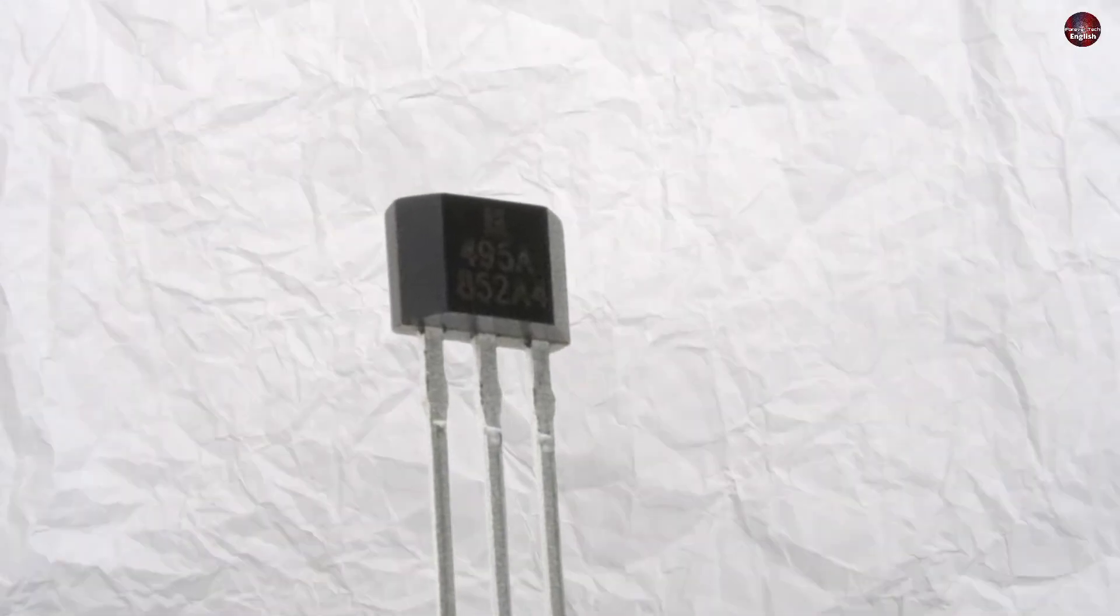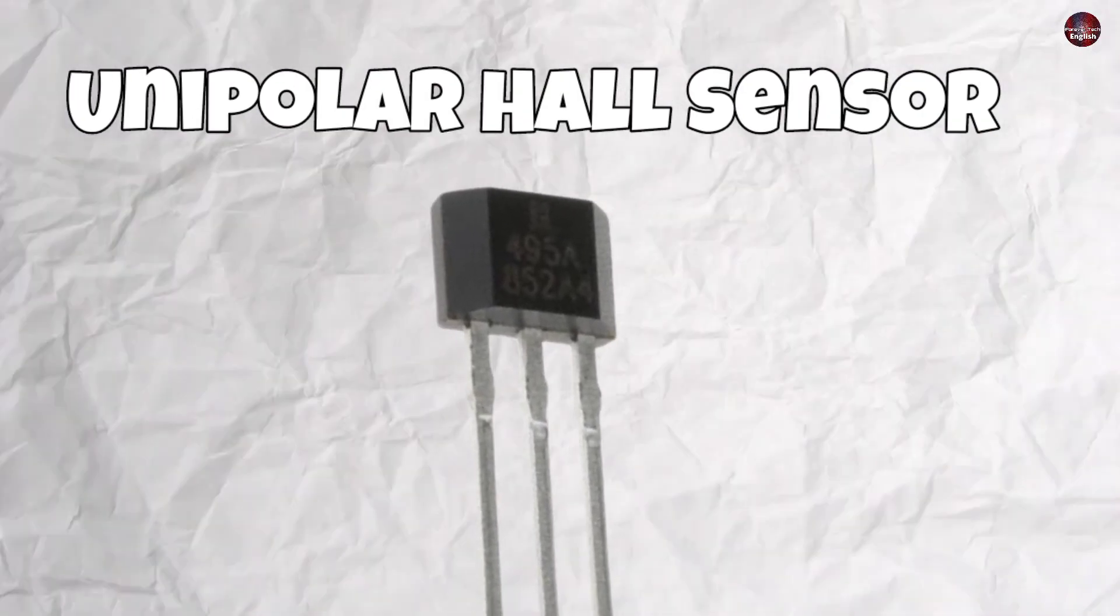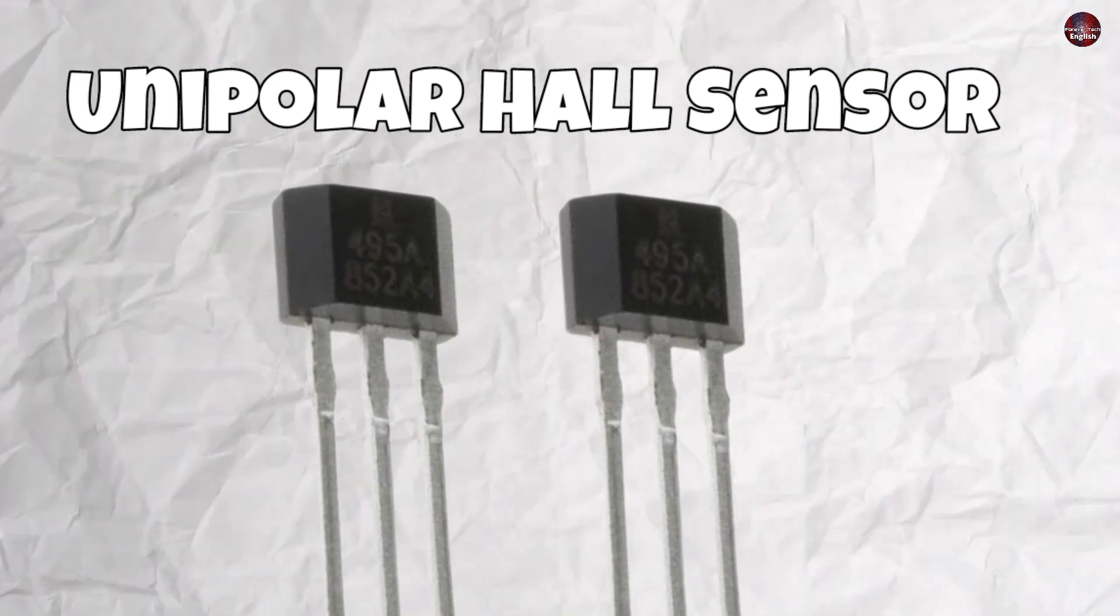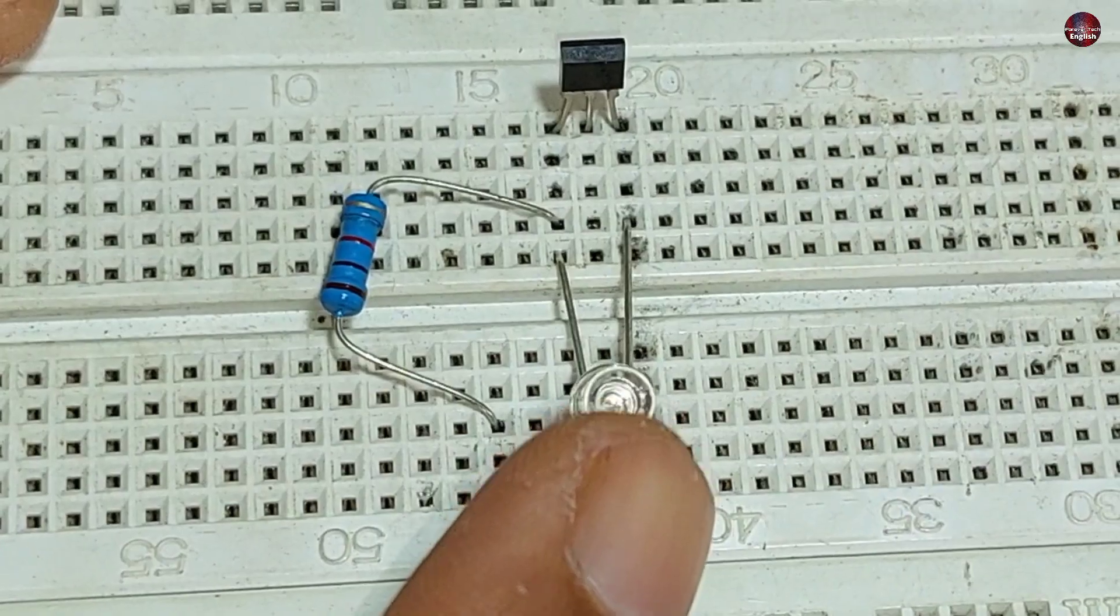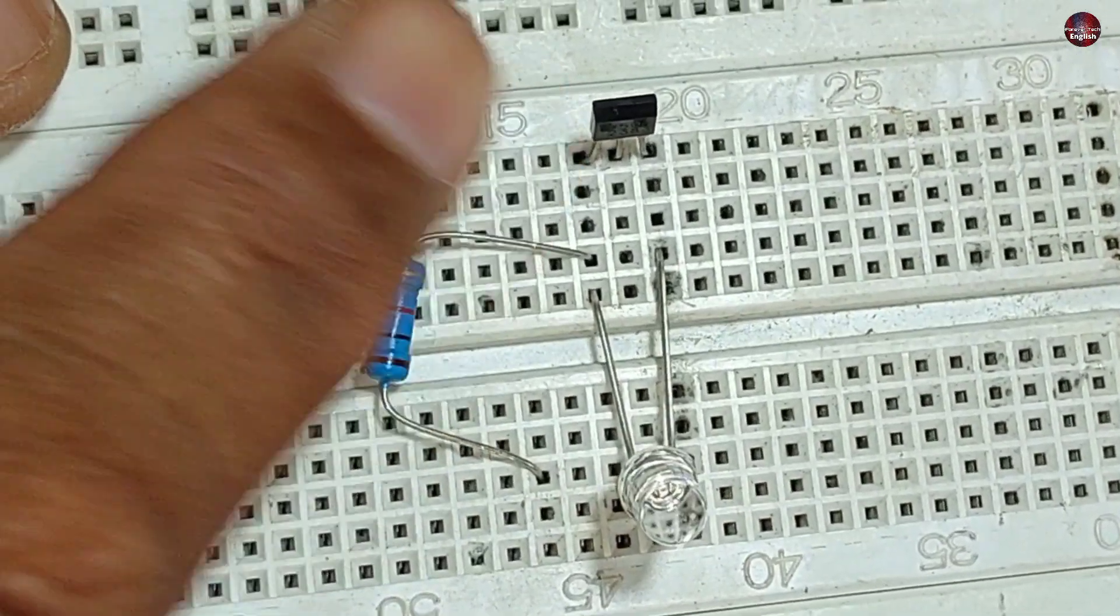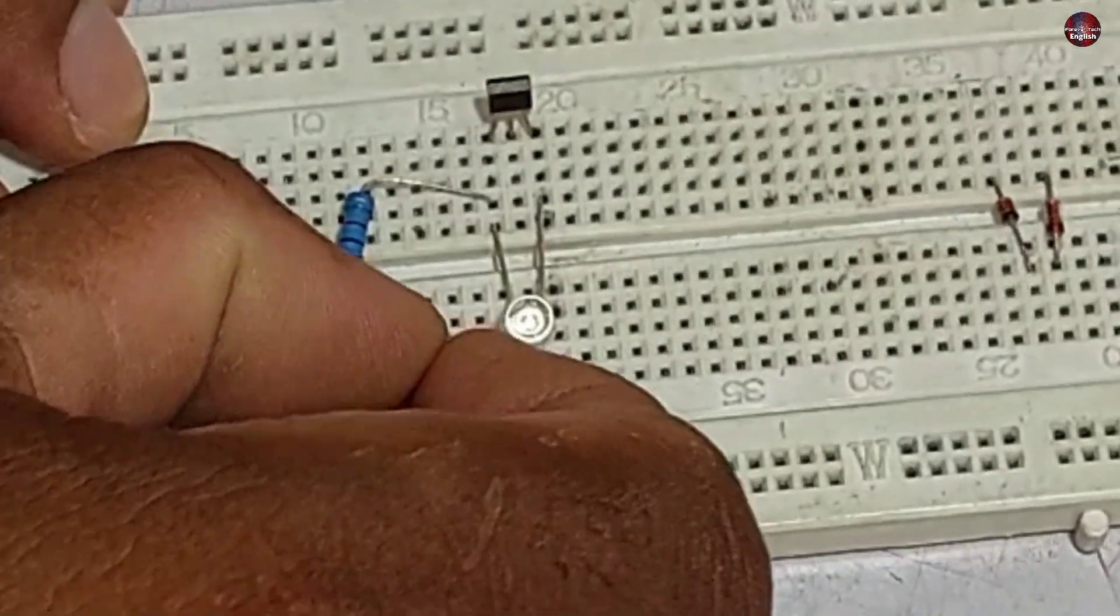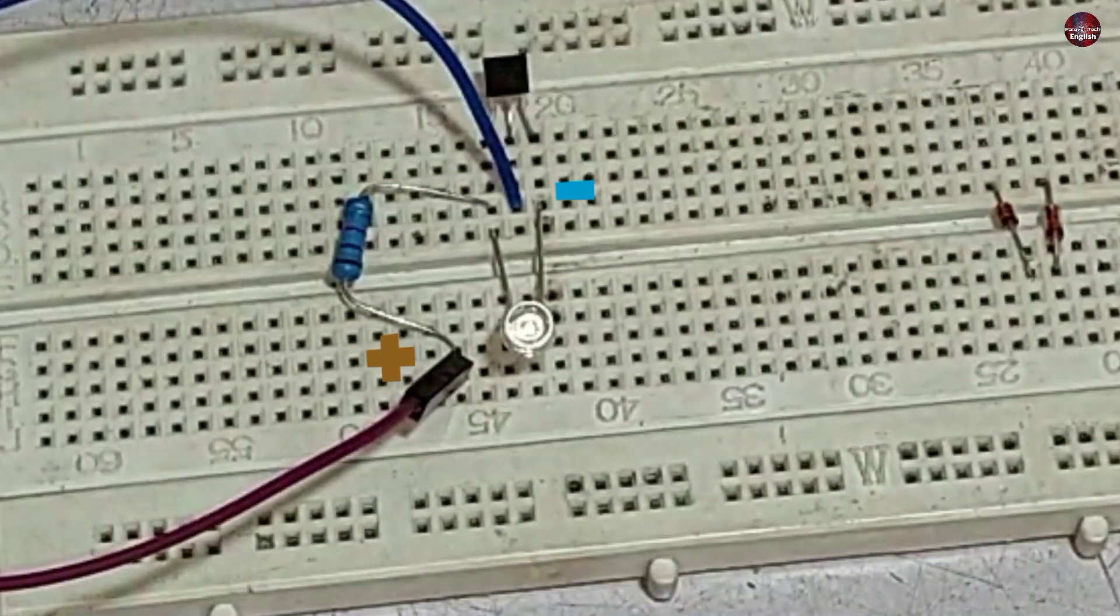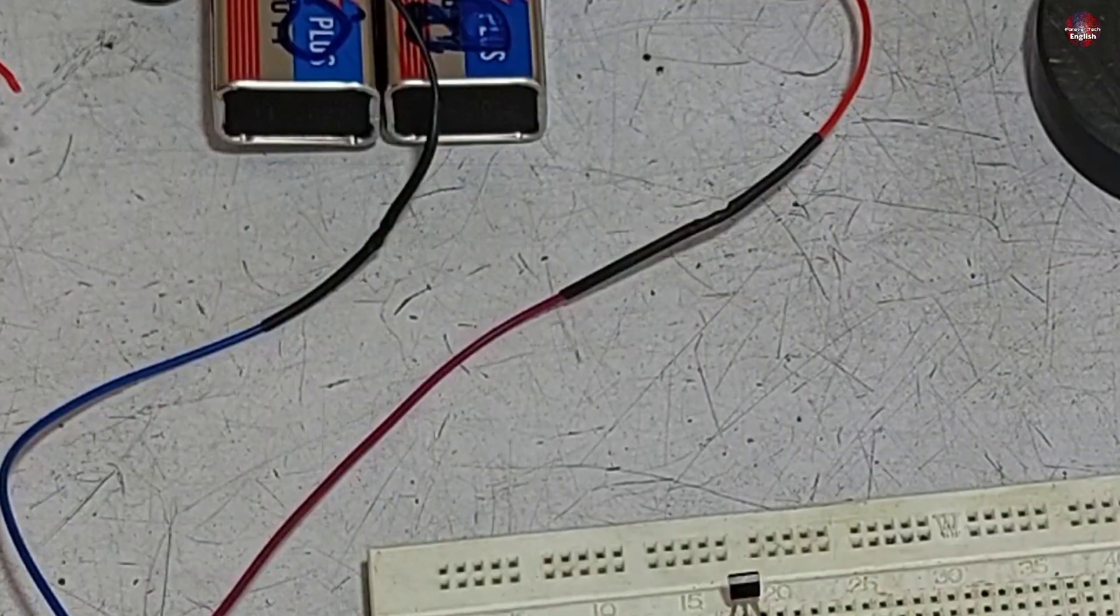The first example we will see of a unipolar hall sensor, how the hall sensor works in unipolar. I have attached an LED light and a resistor with a hall sensor. Now I am attaching the battery supply, the positive with the resistor, and the negative in the center of the hall sensor.